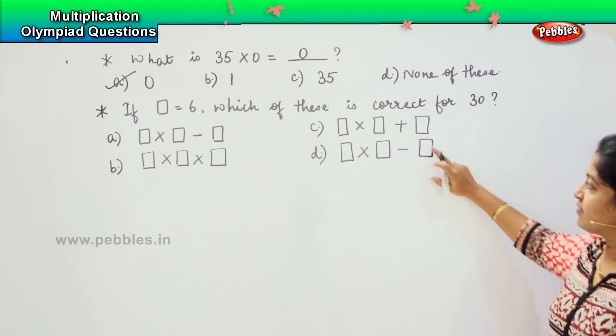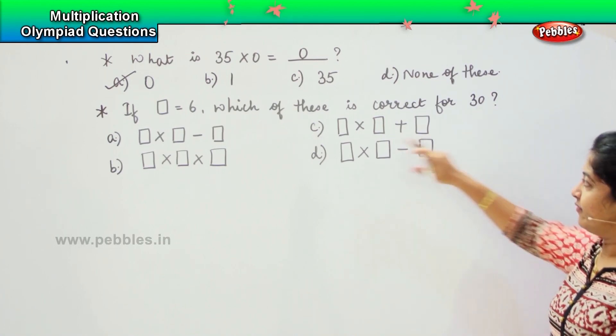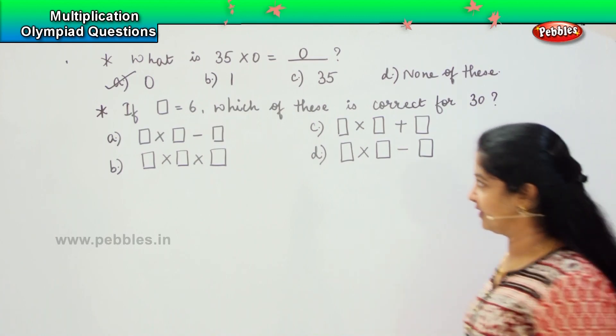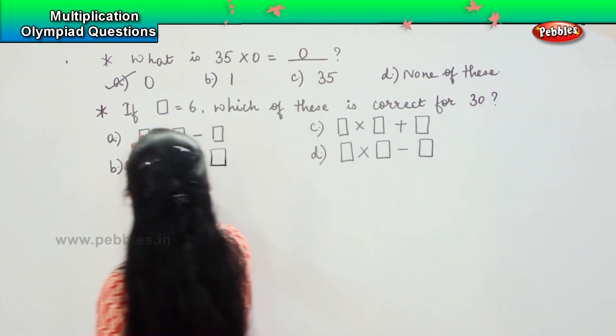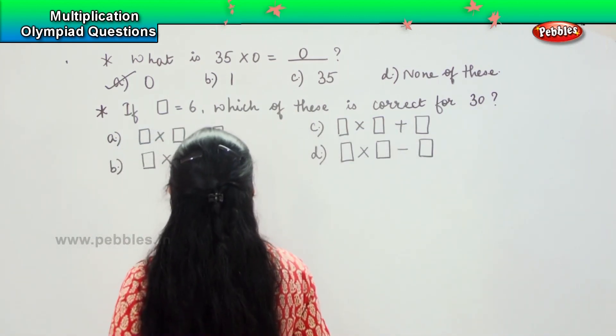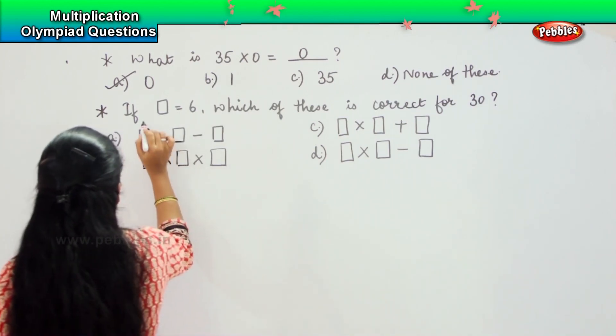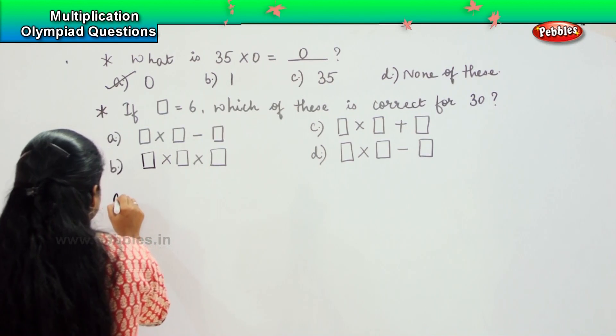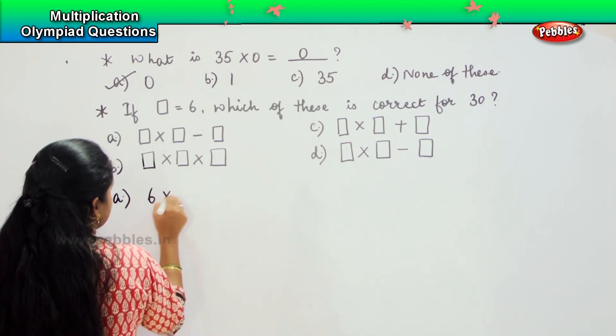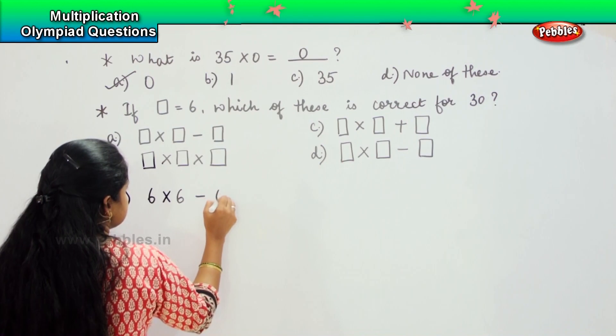Now if the value of square is 6, you need to tell me which among these has a value 30. Shall we solve that? Here it says this is 6, right? So solving the first one, it is 6 into 6 minus 6.